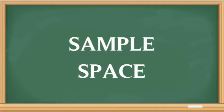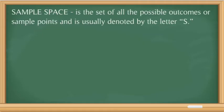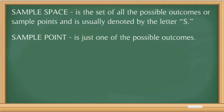Next is sample space. When we say sample space, it is the set of all possible outcomes or sample points, and it is usually denoted by the letter S. When we say sample space, we list down the entire possible outcomes. And when we say sample point, it is just one of the possible outcomes.